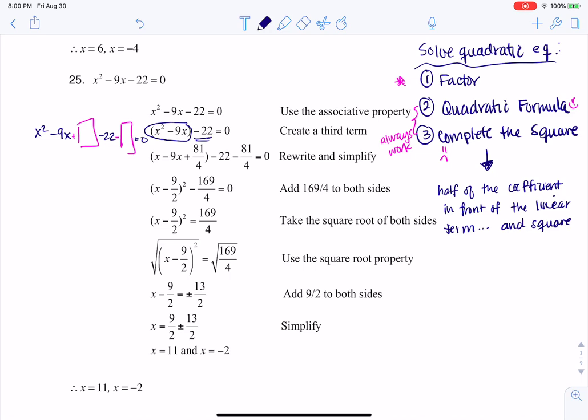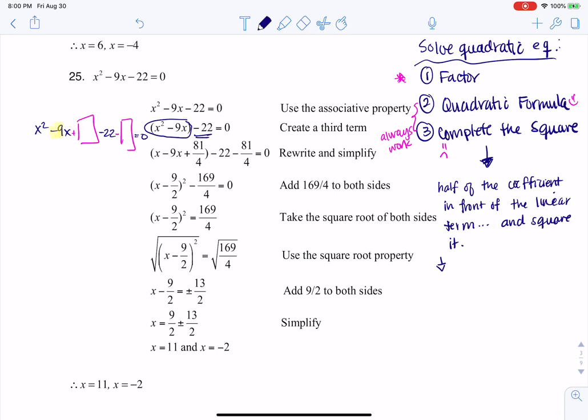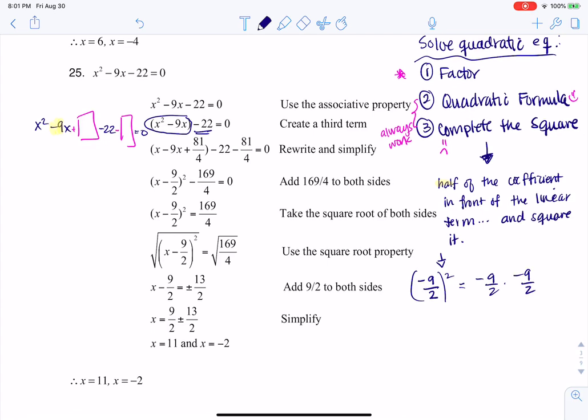And I'm going to show you what that looks like for this particular problem. So the coefficient in front of the linear term for this particular problem is negative 9. So what that means is I'm going to take negative 9, I'm going to divide it by 2 because I want to get half of the linear term, and then I'm going to square it. And when I take negative 9 halves times negative 9 halves, we have fractions being multiplied here. So we're going to multiply the numerators and get 81, multiply the denominators and get 4.